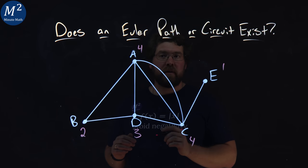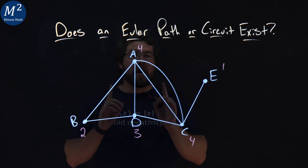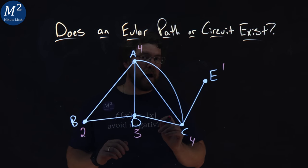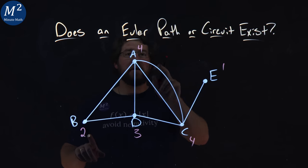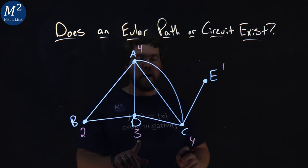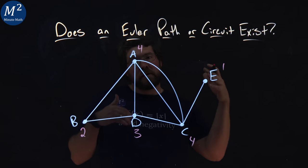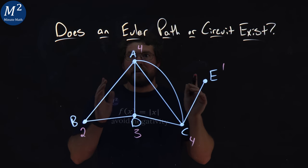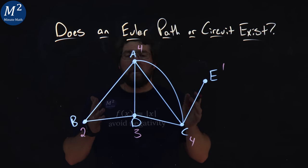An Euler path tells us that all of them have to be even degree, but at most two can be odd. So we have an even degree, even degree, even degree here for the vertices, and we have odd at D and E. We have two odd degrees, so we're still okay for an Euler path.